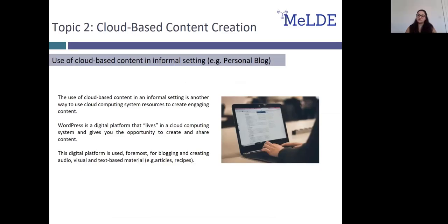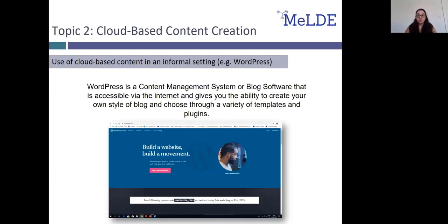Cloud computing system resources can also be used in an informal setting to create engaging content. One such example is WordPress, a digital platform that lives in a cloud computing system and gives you the opportunity to create and share content. This digital platform is used mostly for blogging and creating audio, visual and text-based material, such as articles and cooking recipes. WordPress is first and foremost a content management system or blog software accessible via the internet, giving you the ability to create your own style of blog and choose through a variety of templates and plug-ins.